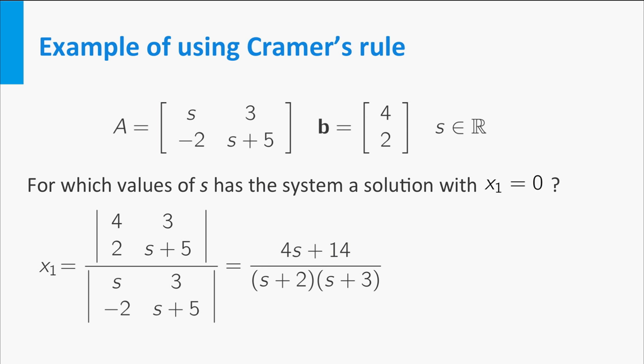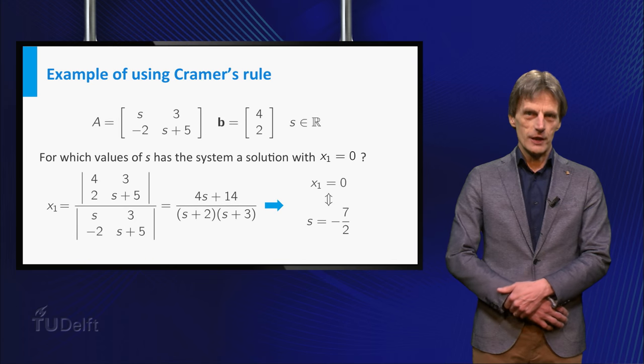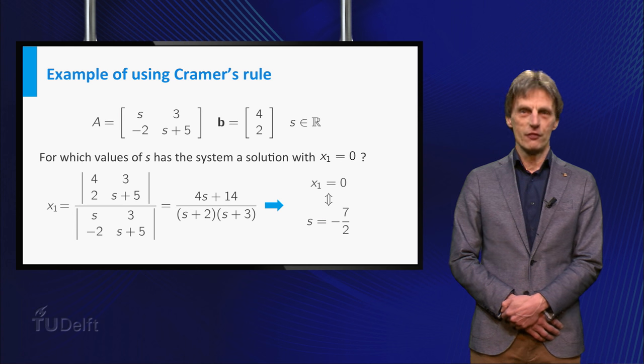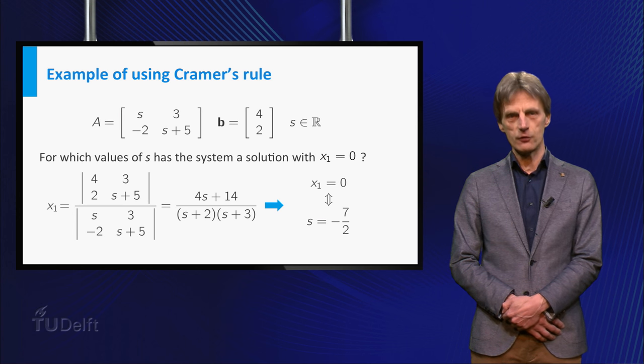And from this we can conclude that the system has a solution with x1 equal to 0 if and only if s is equal to minus 7 over 2. Note that for this value of s the solution is in fact unique because the determinant of A is unequal to 0.